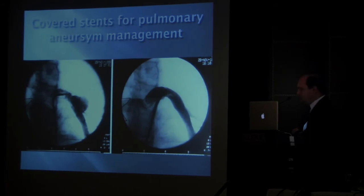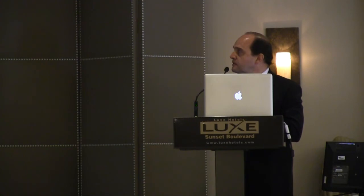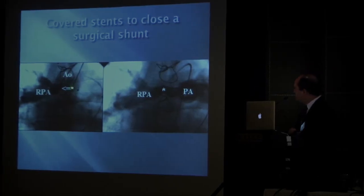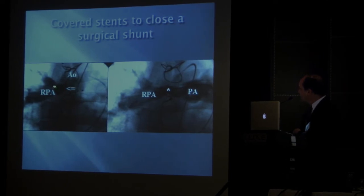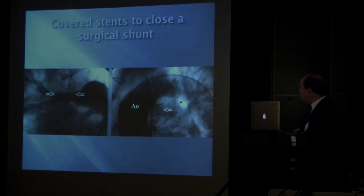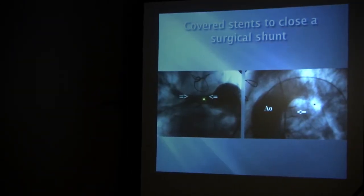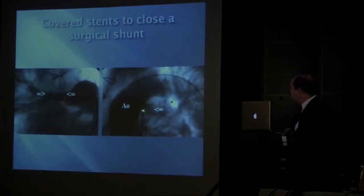This is a covered stent used to treat an aneurysm in a pulmonary artery. And this is an example of a covered stent used to close a Waterston shunt. On injection into the aorta, you can see contrast filling the pulmonary artery. This is the injection into the pulmonary artery showing the area of stenosis where the shunt is anastomosed. After the covered stent is placed, it relieves the obstruction, and on the aortic injection there's no further flow across to that pulmonary artery.